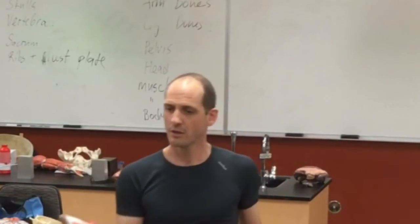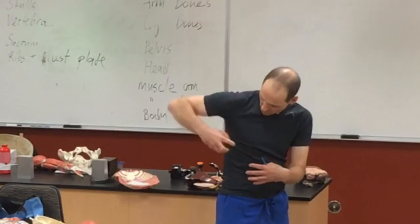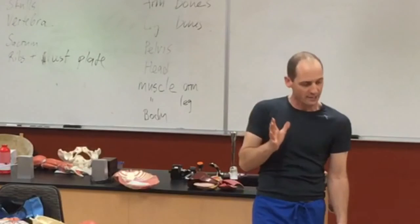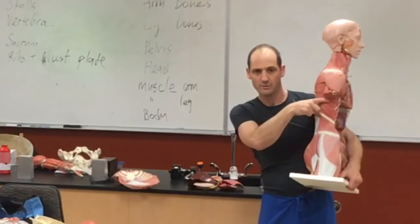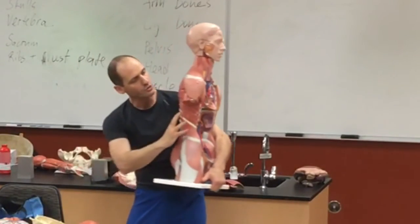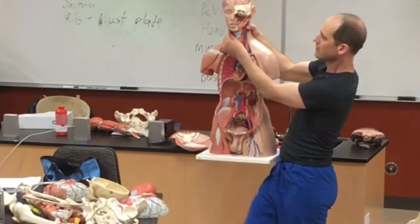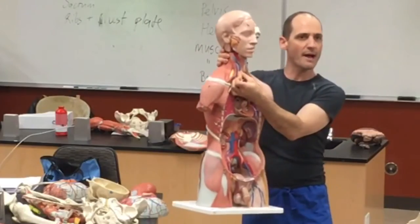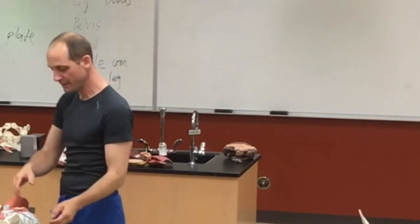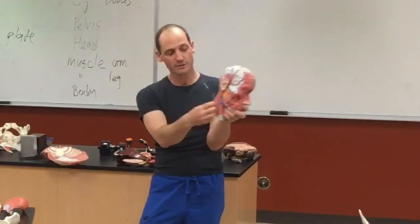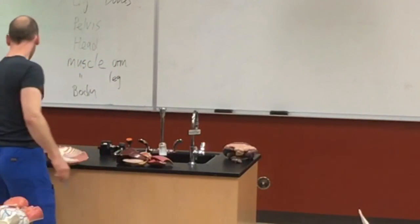The serratus anterior is actually the boxer's muscle — you see it on boxers and it pops out. They stick out and hold the scapula into the chest. And that's another one I point out here — right here on the side, the serratus anterior. They run underneath the trap. And then the sternocleidomastoid is one more. It goes from the sternum and clavicle up to the mastoid process. Sternocleidomastoid. And that gets us to the end — we're almost done.